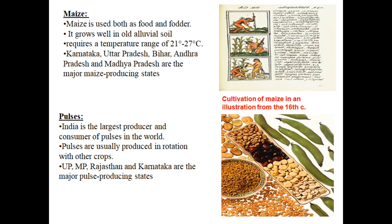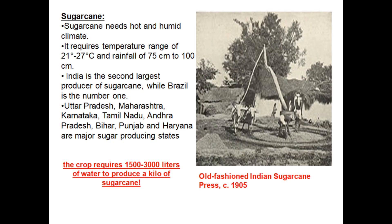Now we come to sugarcane. Sugarcane needs a hot and humid climate, requires a temperature of 21 to 27 degrees Celsius and rainfall of 75 to 100 cm. India is the largest producer of sugarcane after Brazil — Brazil is number one. Sugarcane requires 1,500 to 3,000 liters of water per kilogram, and it takes about 10 kilograms of sugarcane to produce 1 kilogram of sugar.